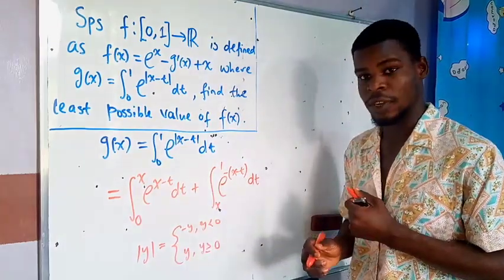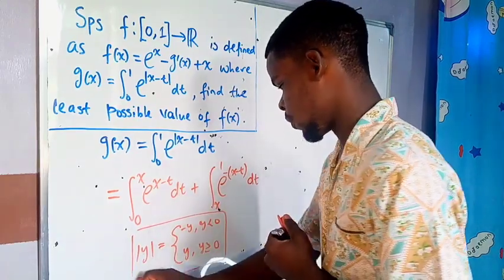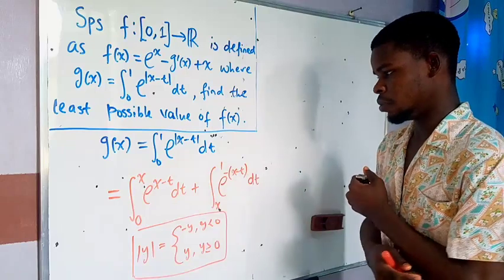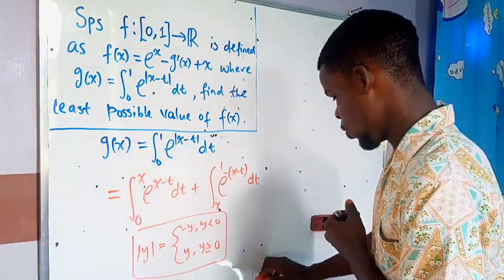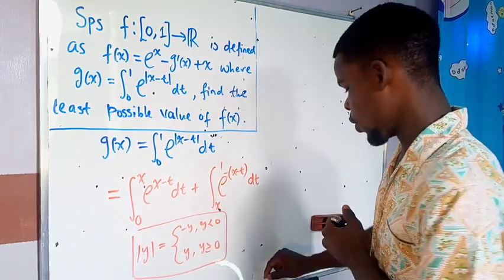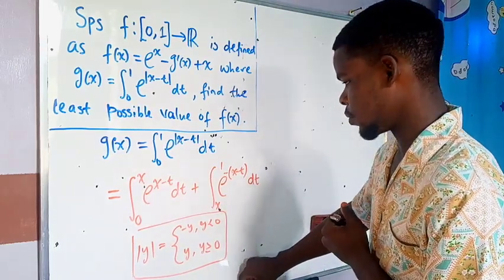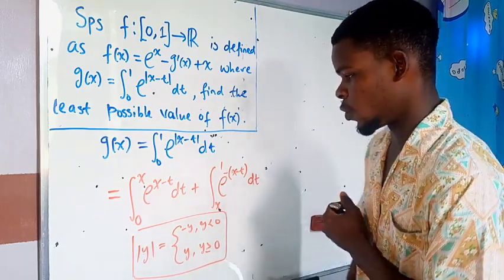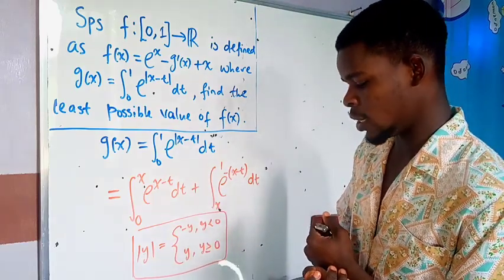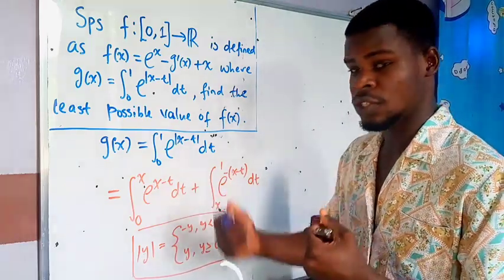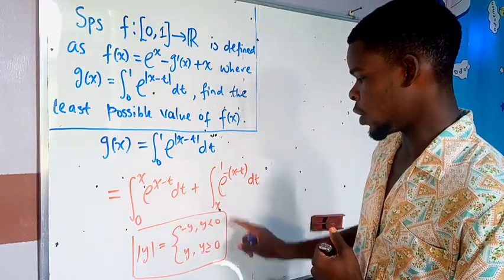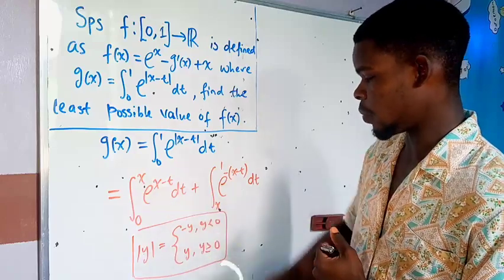So we've successfully separated the integral into two parts, from 0 to x plus from x to 1, by applying the definite integral additive rule: if a function is continuous on [a, b], we can split the integral as from a to c plus from c to b, for any point c in between.